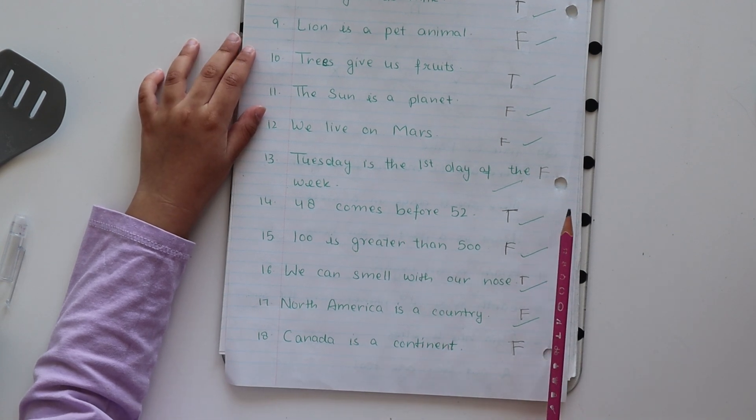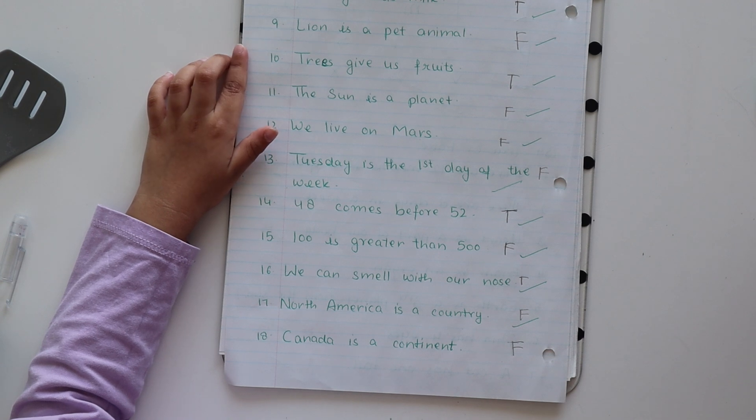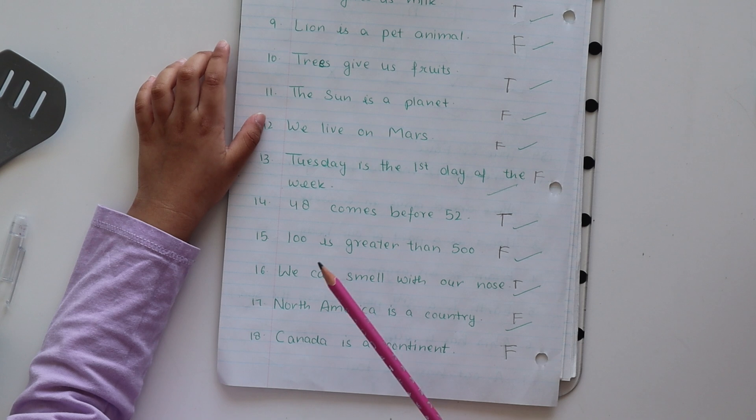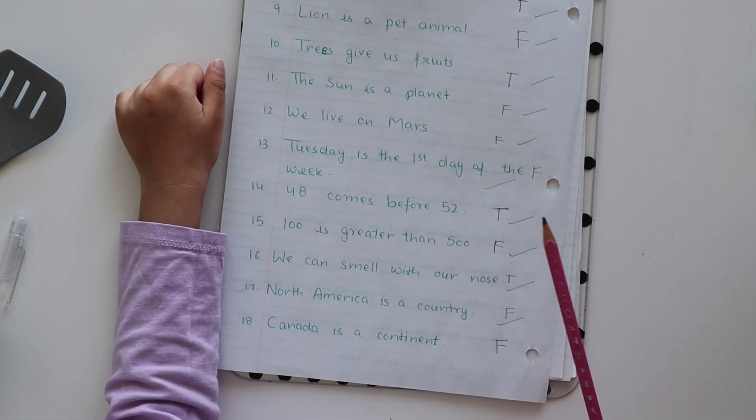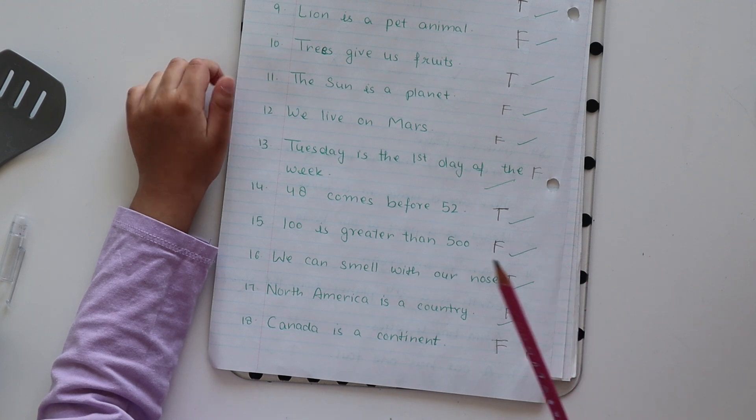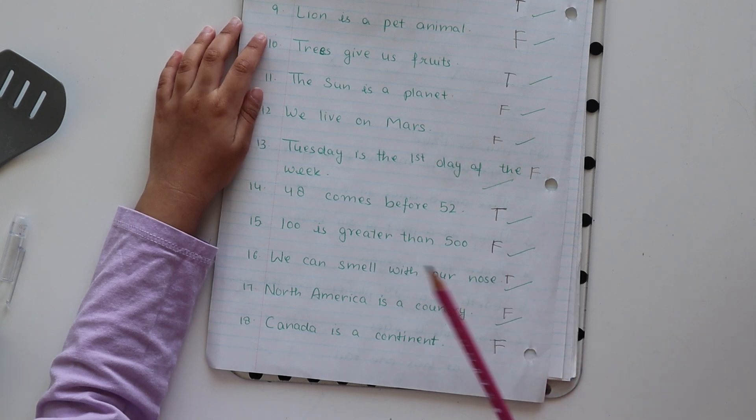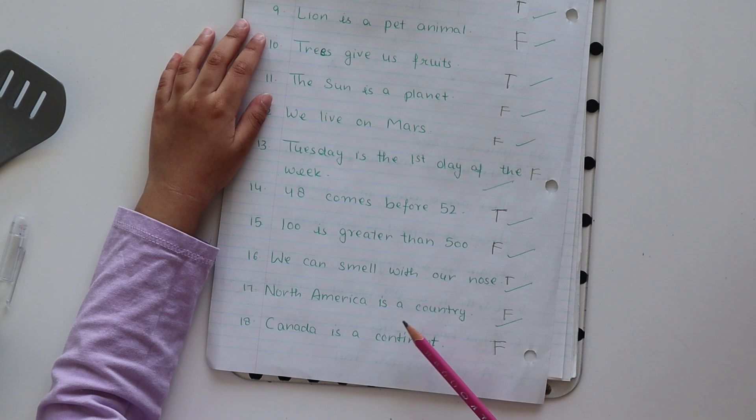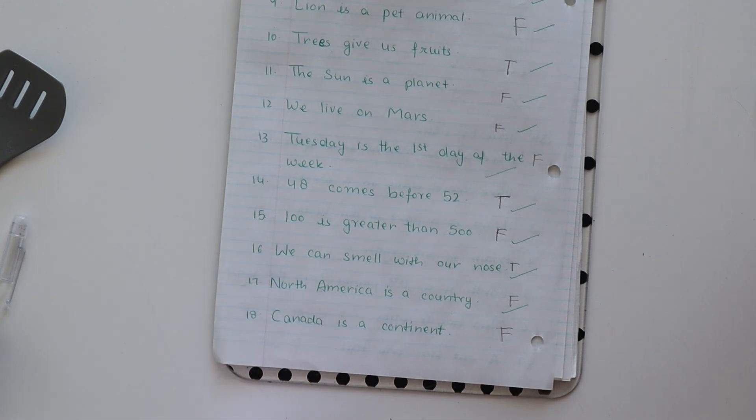Today is the first day of the week. False. Why? Because... Which is the first day of the week? Sunday. 48 countries for 52. True. Language is greater than 500. False. We can smell with our nose. True. North America is a country. Why? Because it isn't a country. So what it is? It's a continent.